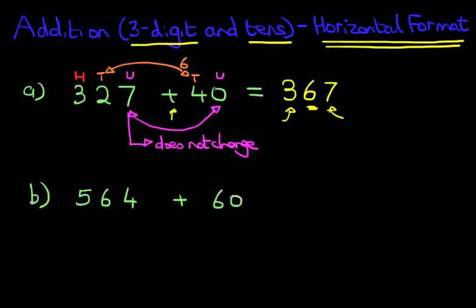Now this one is a bit more tricky. 564 plus 60. We'll do this the same way. Notice the plus sign, we always point that out. The units. What do we notice here? It doesn't change. 4 plus 0 is 4. That was the easy part.